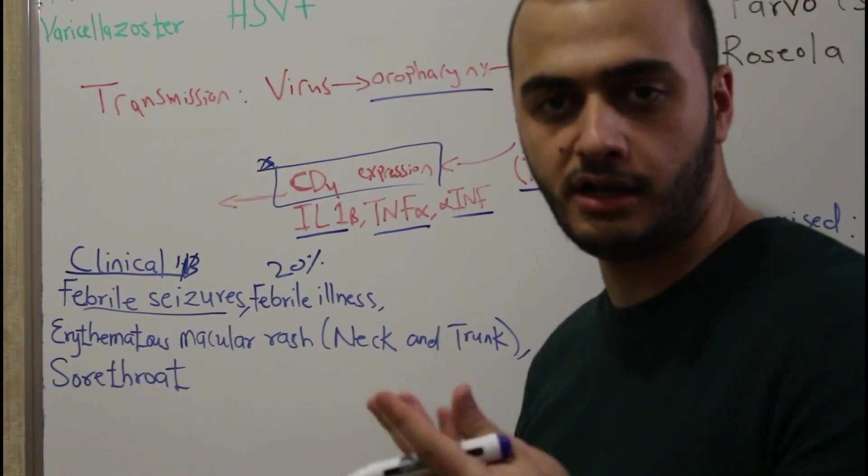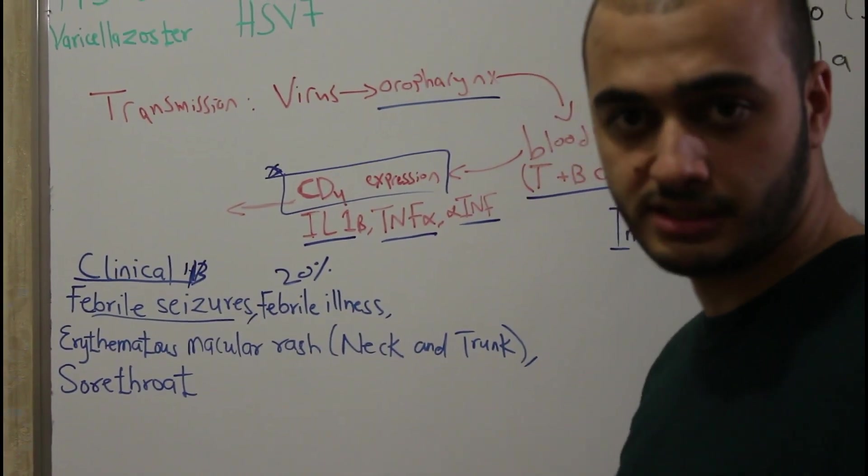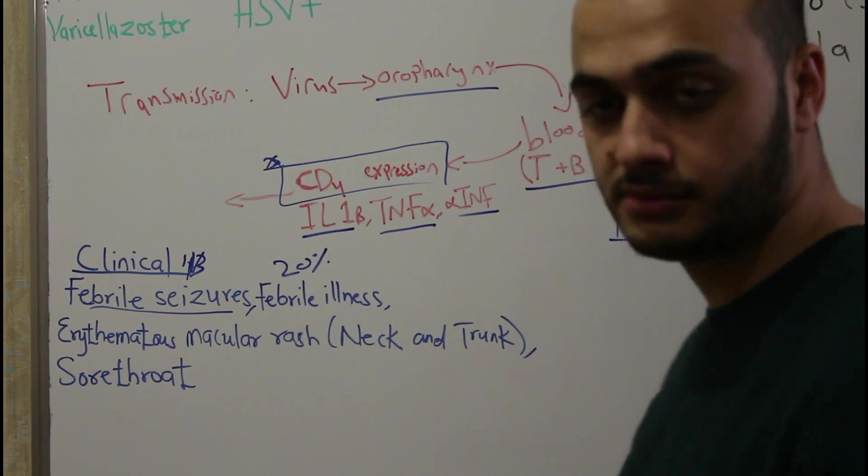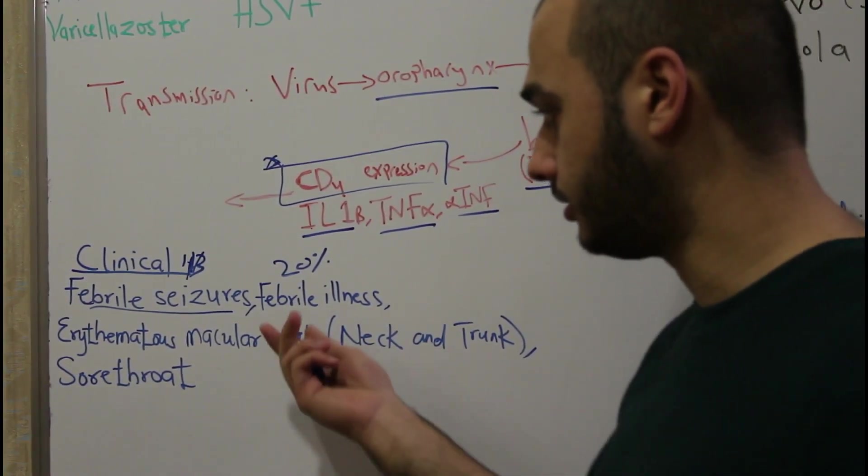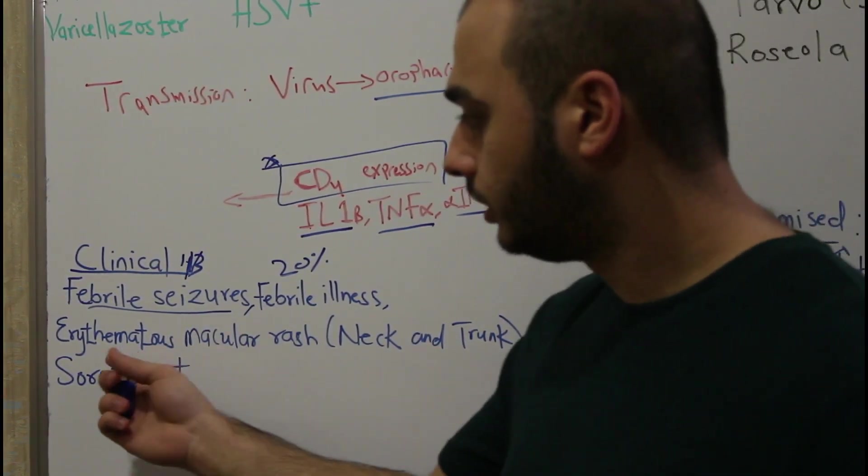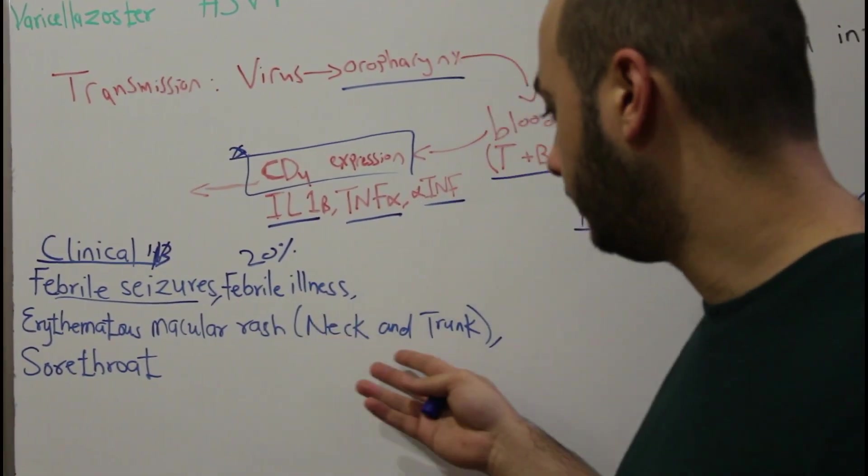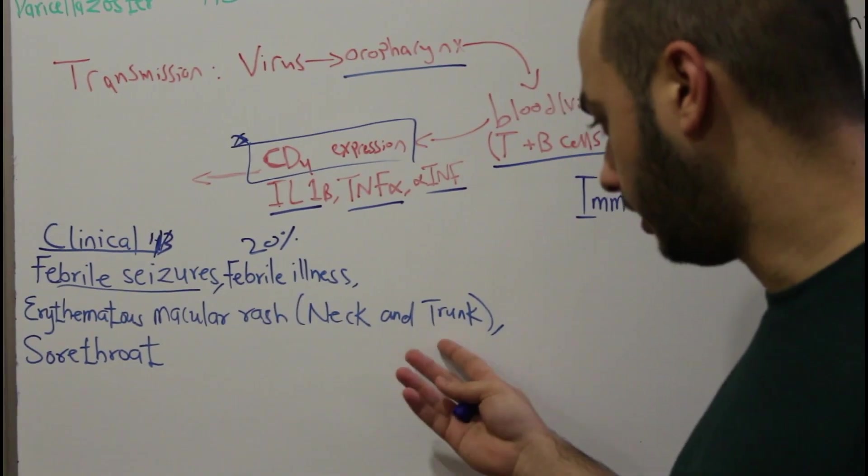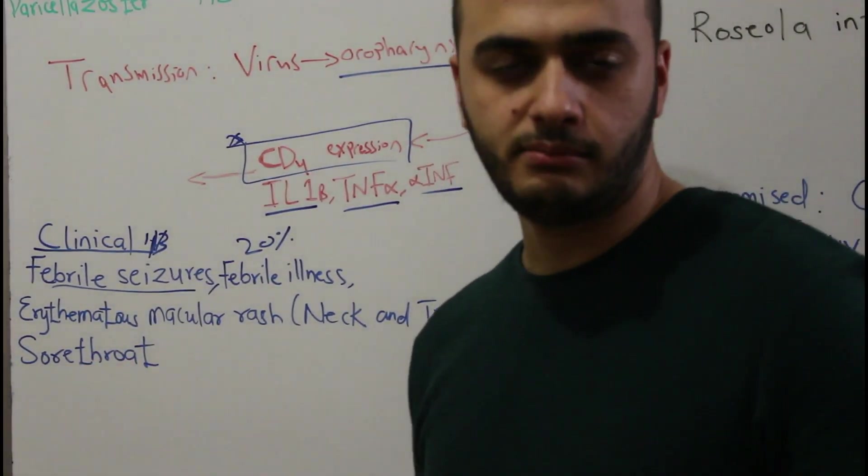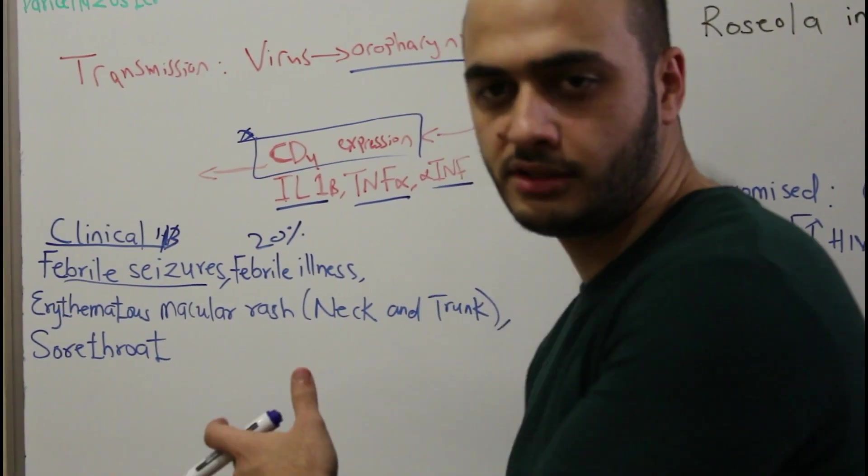Febrile seizures and febrile illness due to high fever will have several consequences and pathologies. There will be macular rashes which start on neck and trunk. Mostly children acquire this virus.